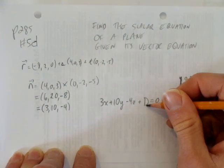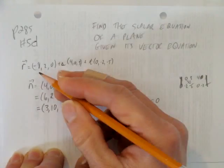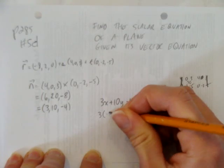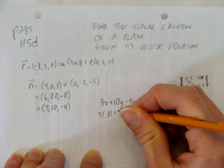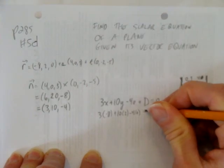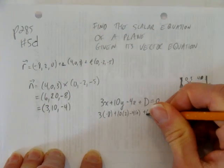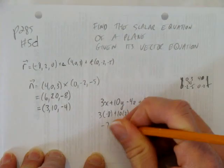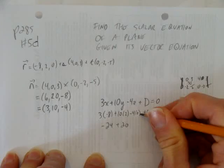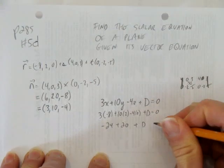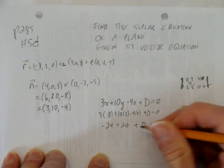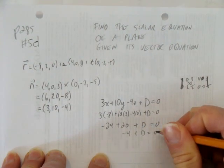The only thing left now is to solve for d. And how do I solve for d? Sub in the point. That is, this point here. 3 times negative 8 plus 10 times 2 minus 4 times 0 plus d has to equal 0. So now I get negative 24 plus 20 minus nothing, 4 times 0, plus d has to equal 0. So I get negative 4 plus d has to equal 0.